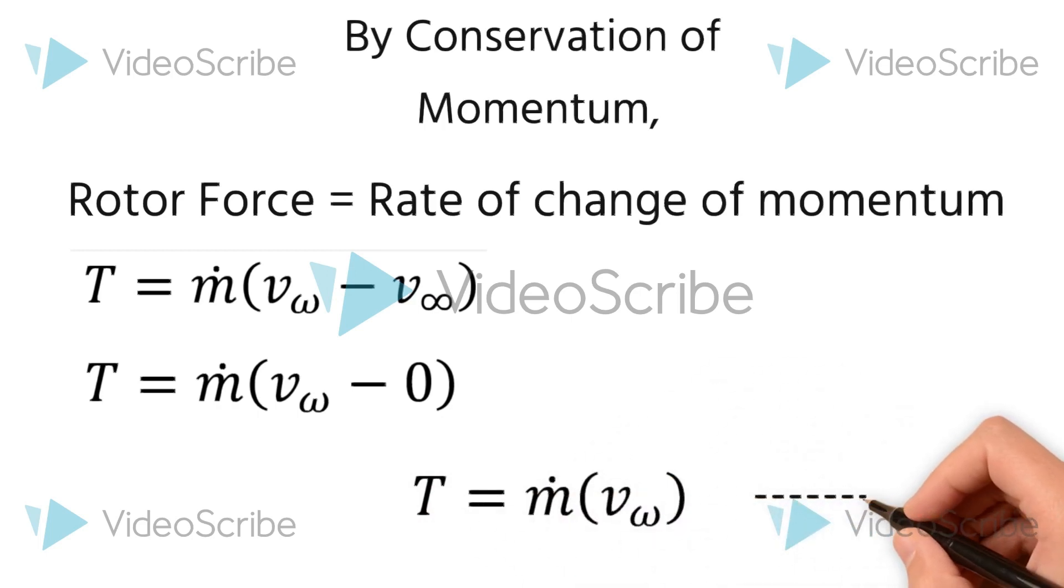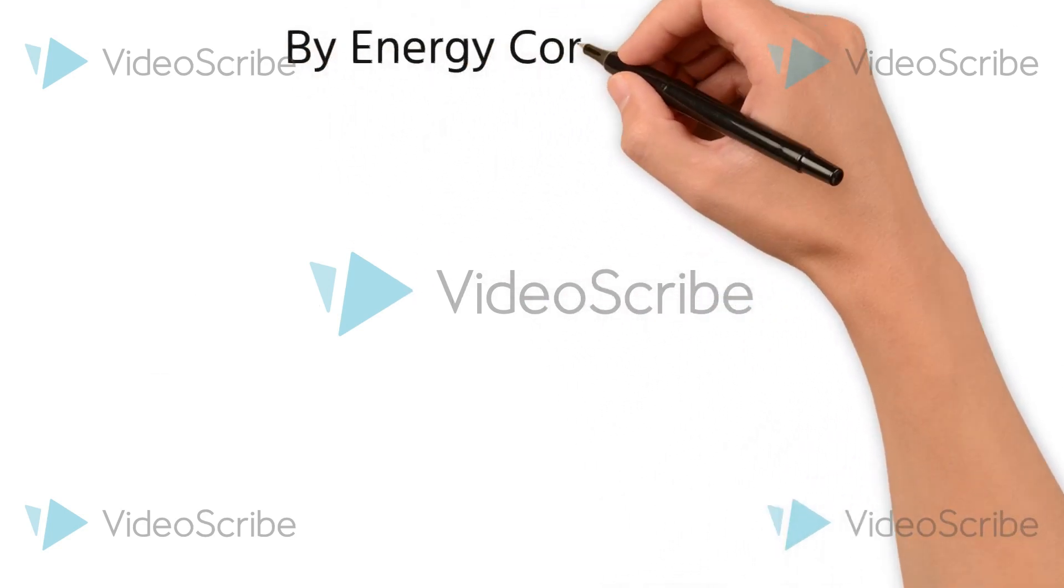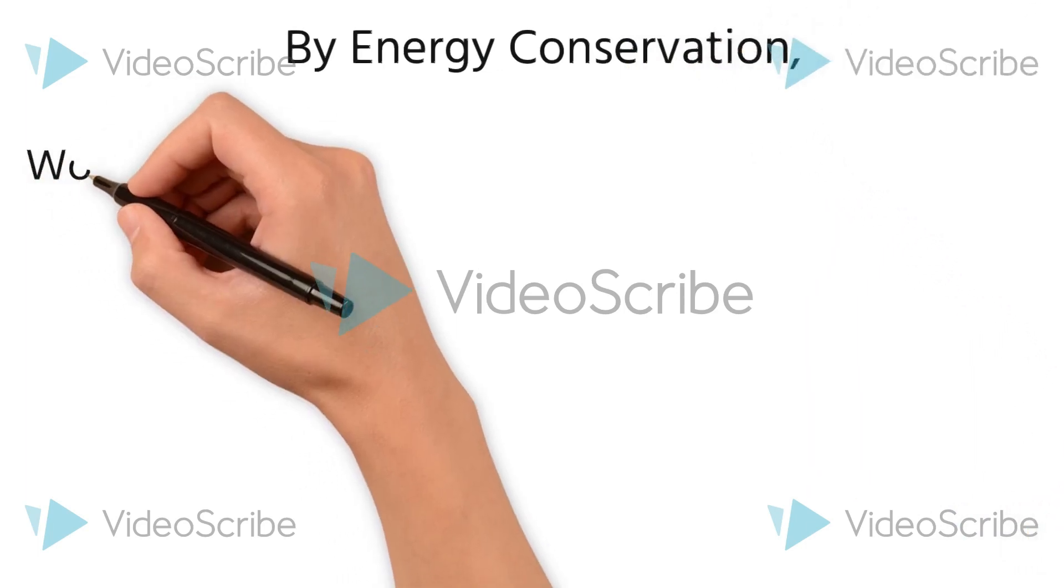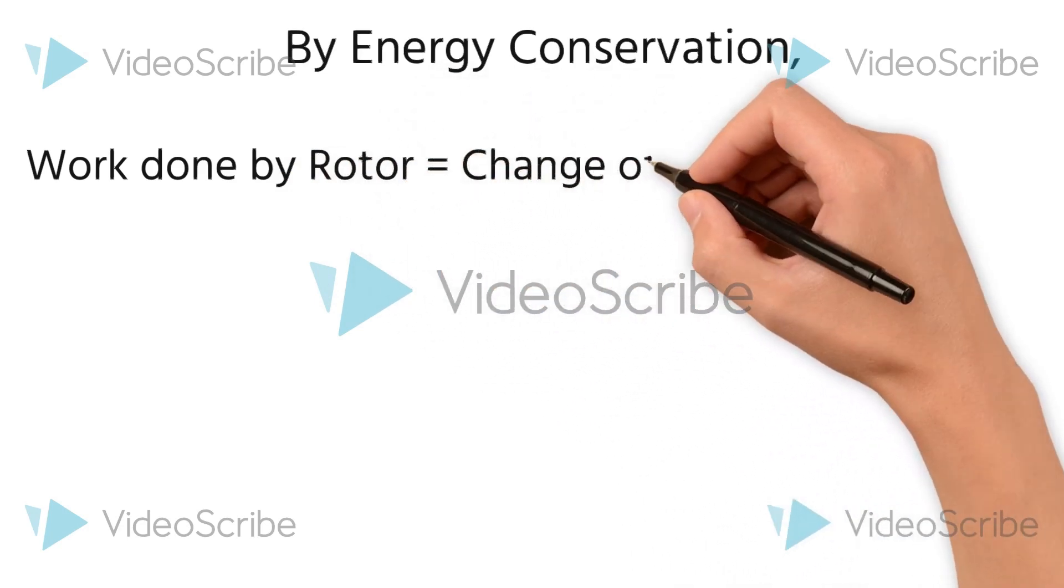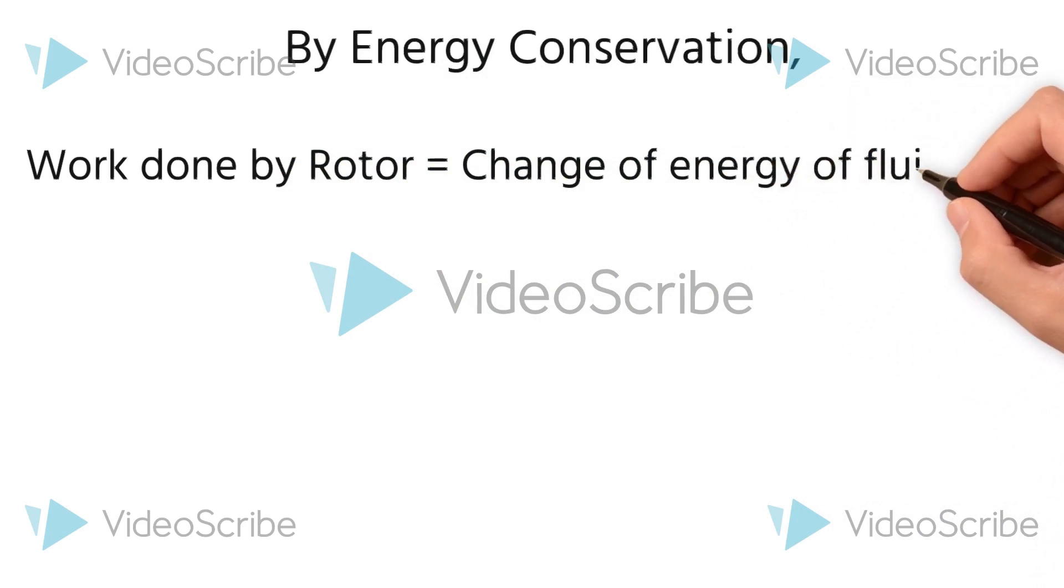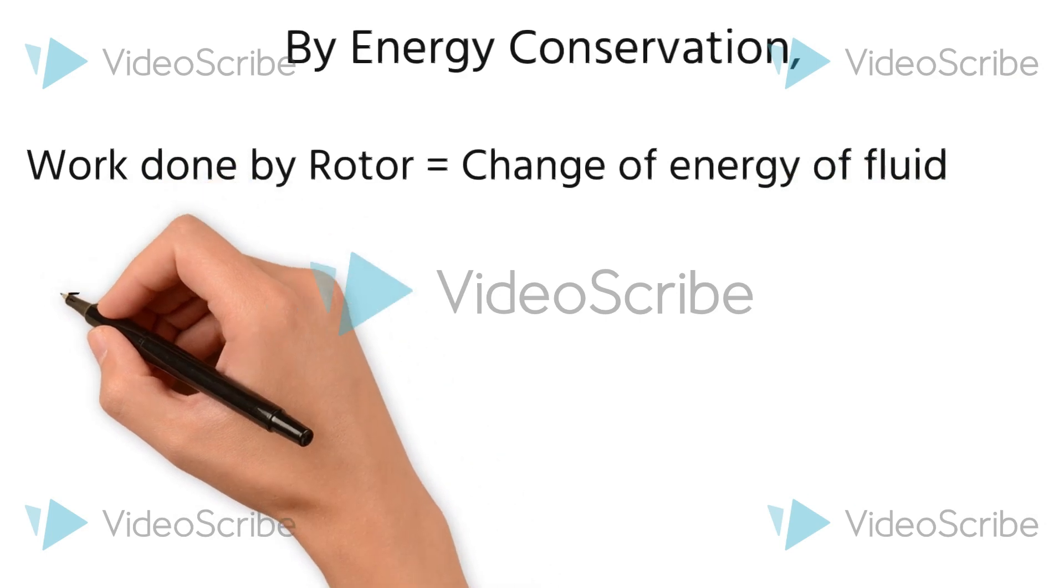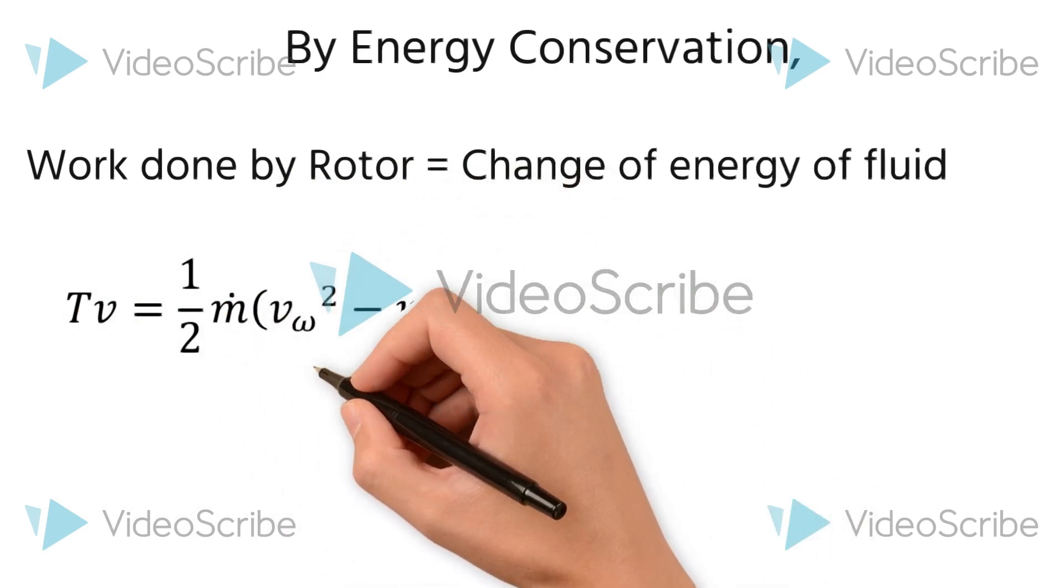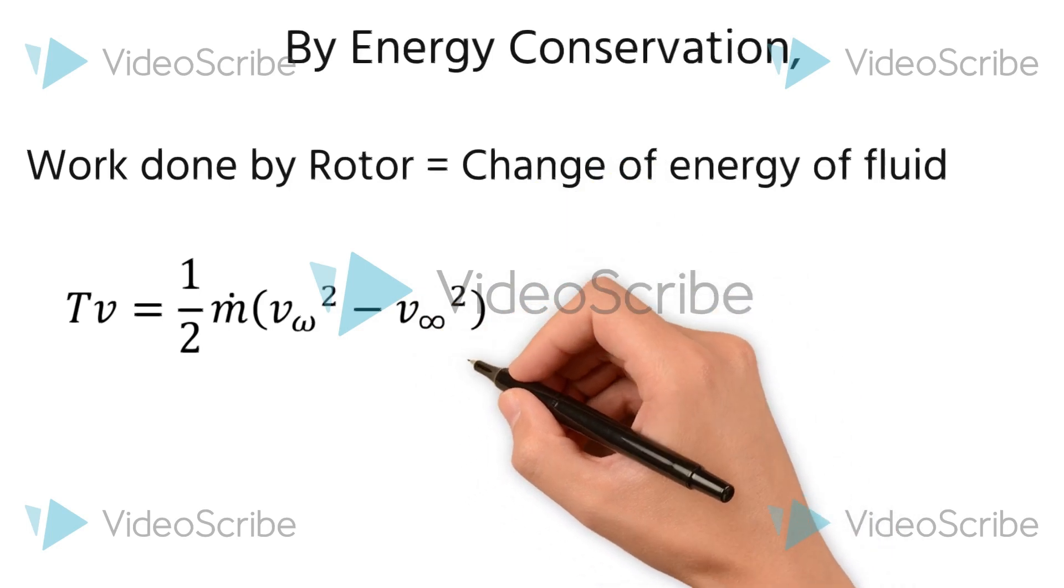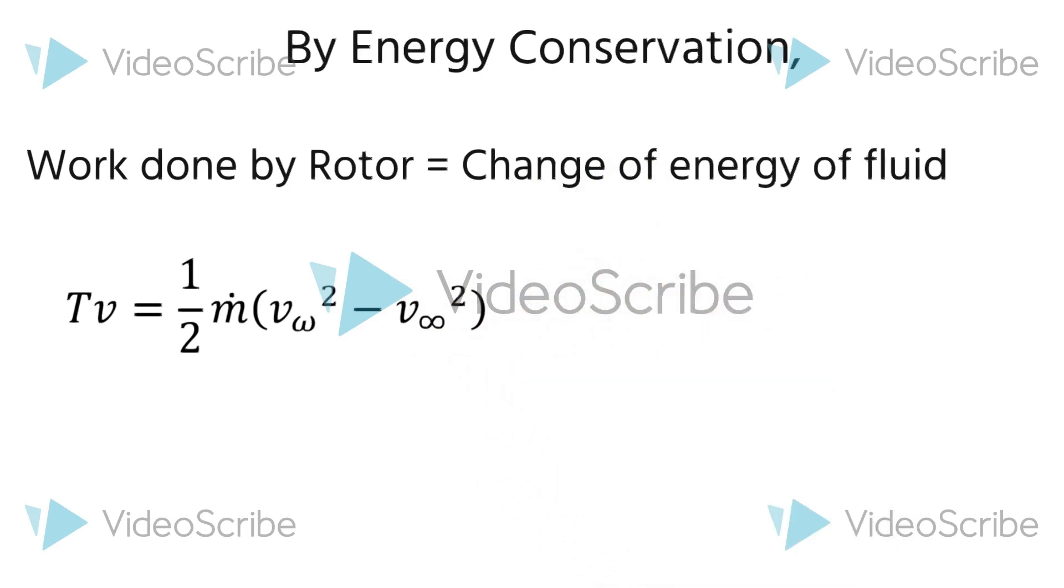The third main equation we are considering is energy conservation. Energy conservation says that the work done by the rotor is equal to the change of energy of the fluid. The work done is nothing but thrust times velocity, which is equal to half mass flux times the difference between the wake velocity squared and the upstream velocity squared. As I said earlier that the upstream velocity is equal to zero, the equation of the work done by the rotor becomes ½ṁVw².